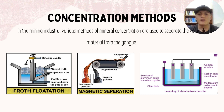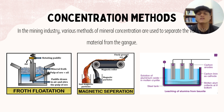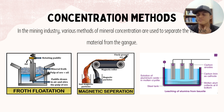The next part covers concentration methods. In the mining industry, various methods of mineral concentration are used to separate the valuable material from the gangue. Some of the most common methods include flotation, magnetic separation, leaching, and other processes specific to different types of minerals.